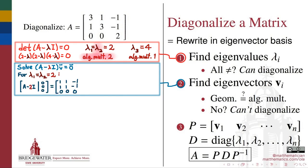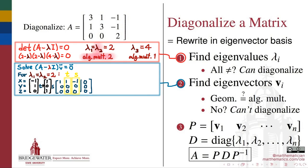For the eigenvalue 2, the augmented matrix (A minus 2I | 0) gives us a system of equations whose reduced row echelon form reveals two free variables. Setting those free variables equal to parameters t and s, we find that if y equals t and z equals s, then x plus t minus s equals 0, so x equals negative t plus s. Factoring out the parameters t and s, we discover that the vectors (-1, 1, 0) and (1, 0, 1) form a basis for the eigenspace associated with the eigenvalue 2.